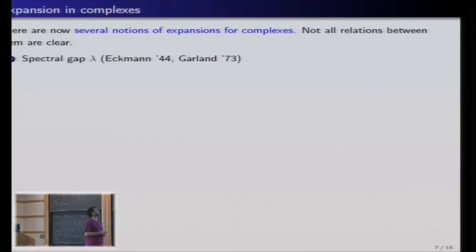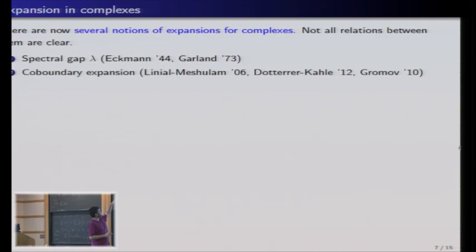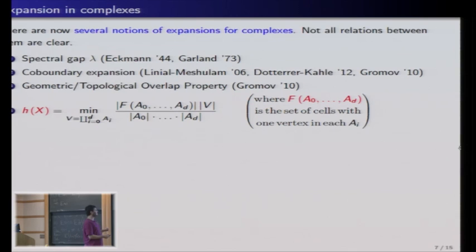So first there is a spectral definition, a spectral Laplacian, which starts with work of Beno Eckmann from the 40s, and is most known, I think, from the famous work of Garland. And there is a definition of expansion which is very, I think, active now in computer science, which I will not talk about due to these people, and a very interesting and hard one due to Gromov, which has to do with the mapping of complexes into Euclidean spaces.